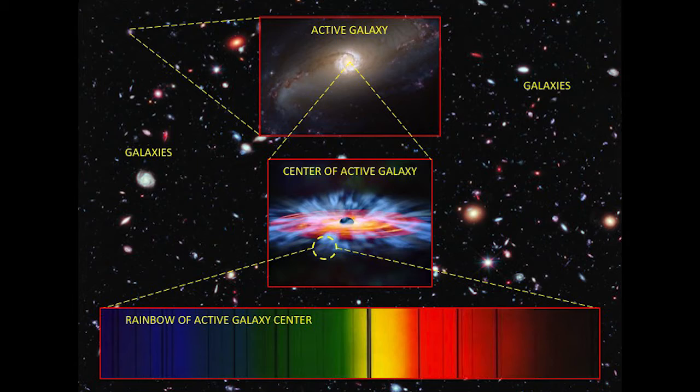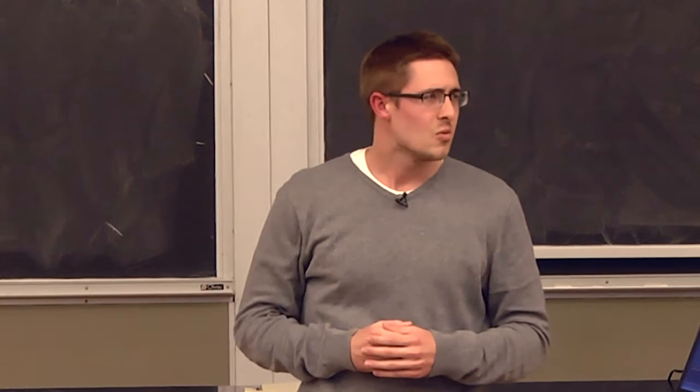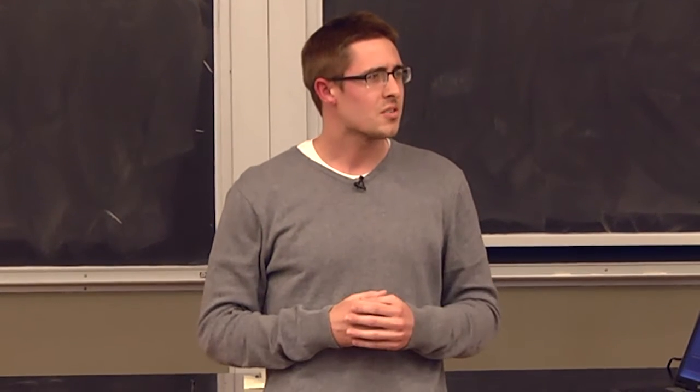Nearly every smudge you see in the background here is a galaxy. If you look closely, you see that galaxies come in many different shapes, sizes, and colors. Why do galaxies look different from one another?